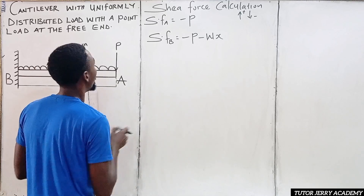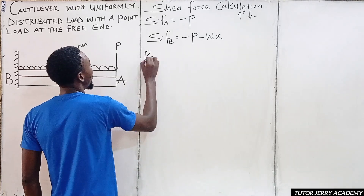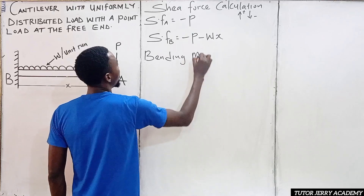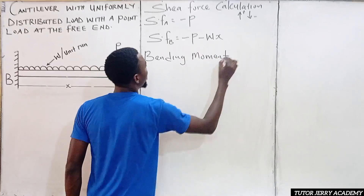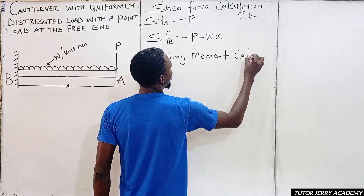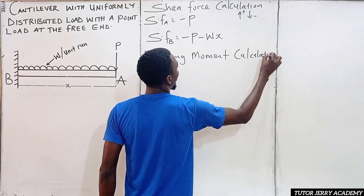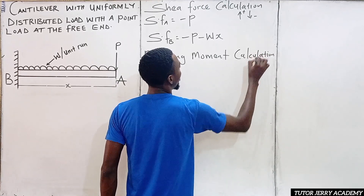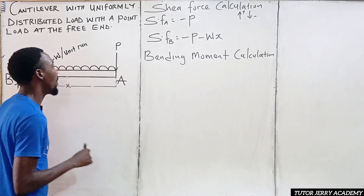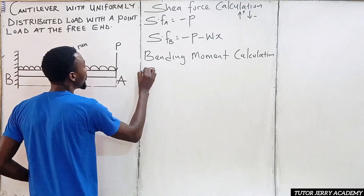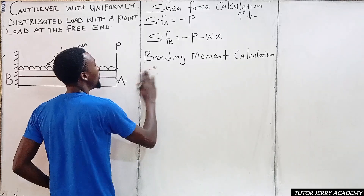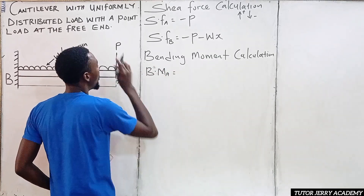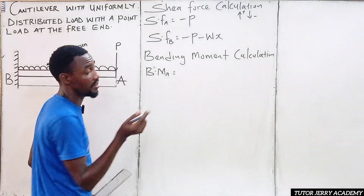We are done with the shear force calculation. The next one is bending moment. The bending moment at the free end — point A — is zero.